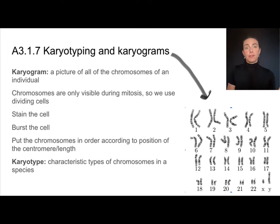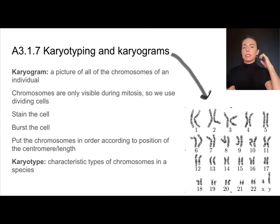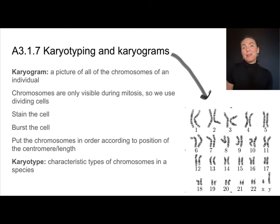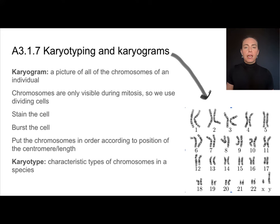Once I have this karyogram, I can then do a karyotype — the characteristic types of chromosomes in a species. I can make certain assumptions about a species from their karyogram, and that is called a karyotype. For example, I'm assuming this is a human because it has 46 chromosomes. I'm also going to assume that it's a male because it has an X and Y chromosome.